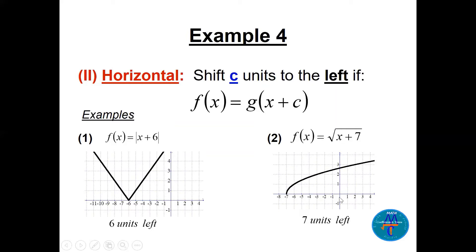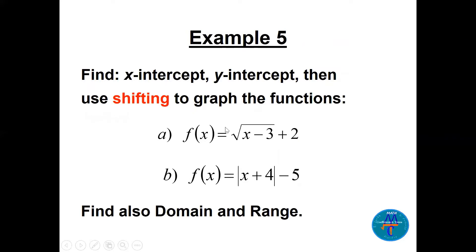For √(x + 7): the square root starts from zero and shifts to the left seven units, so the graph starts from (−7, 0). The domain is [−7, ∞) and the range is [0, ∞). Now let's graph f(x) = √(x − 3) + 2, finding x-intercept, y-intercept, domain, and range. The x − 3 is related to x, so the graph shifts three units to the right.